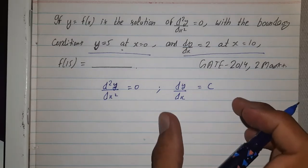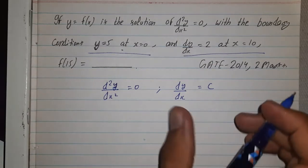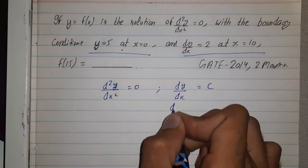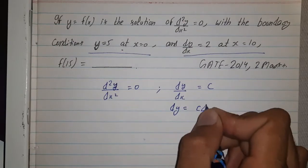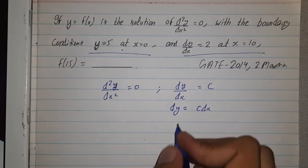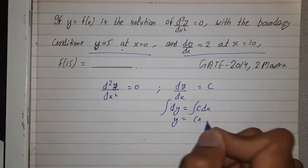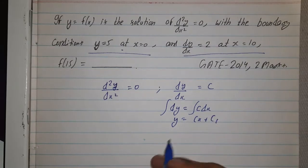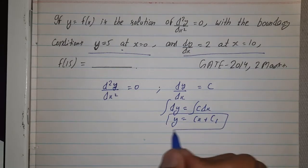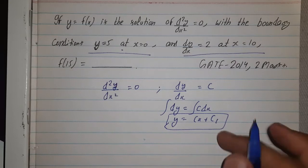Now this is our simple differential equation of first order. We can solve it easily. So dy = c dx. We will integrate both sides. This will become y = cx plus another constant c1. So this is our solution which is equal to f(x).